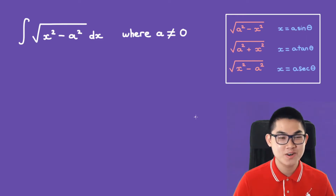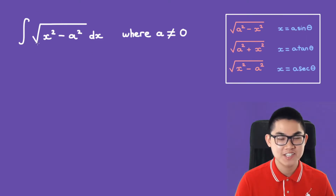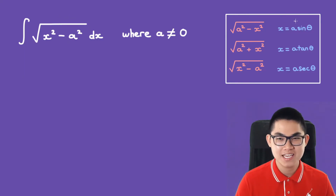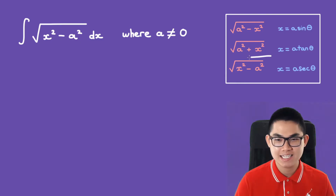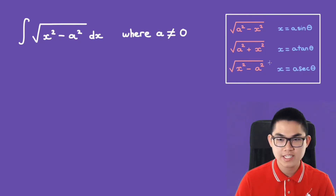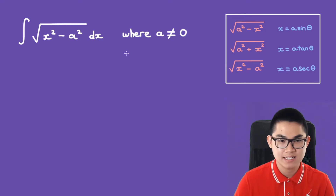In this video, we're going to solve the integral of the square root of x squared minus a squared dx. This is one of the trigonometric substitution formulas, and x would be equal to a times secant.